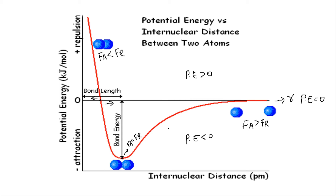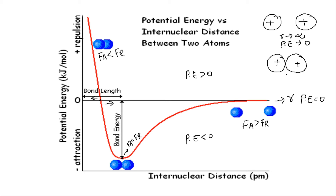To the left of this equilibrium point, potential energy is positive, and to the right of it, potential energy is negative. When the distance is very large (r tending to infinity), potential energy tends to zero. As the atoms come closer, potential energy subsequently decreases until this minimum point. At this location, potential energy is minimum. When potential energy is minimum, the system is stable — this is the favorable situation for the formation of a stable bond.